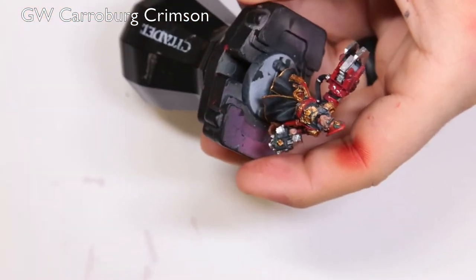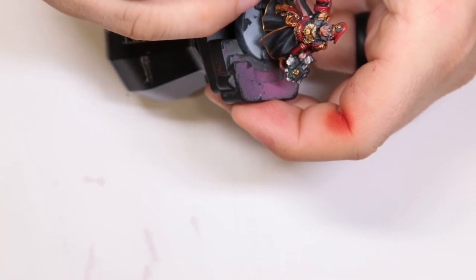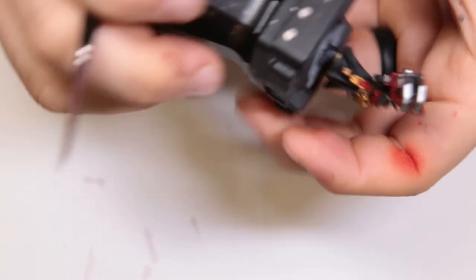Then on to Carroburg Crimson. We thin this down with a little bit of Army Painter wash medium. And then we're just hitting this on all the red stuff throughout his body.